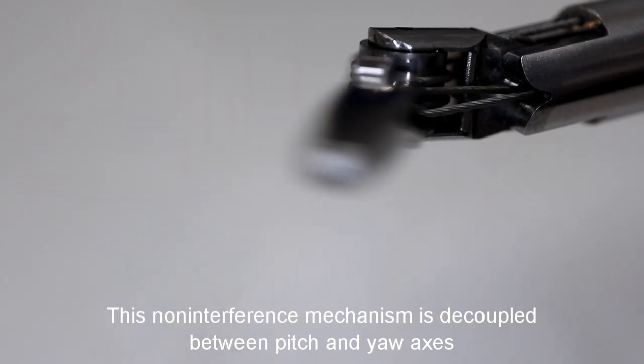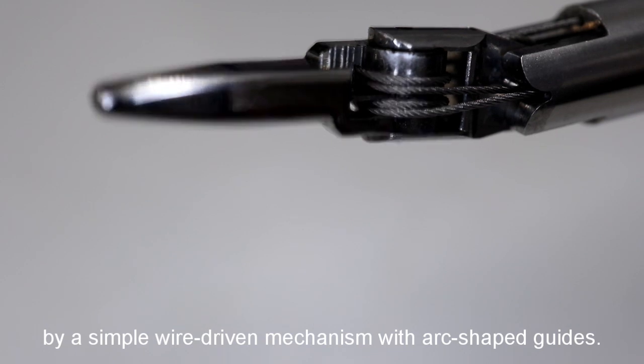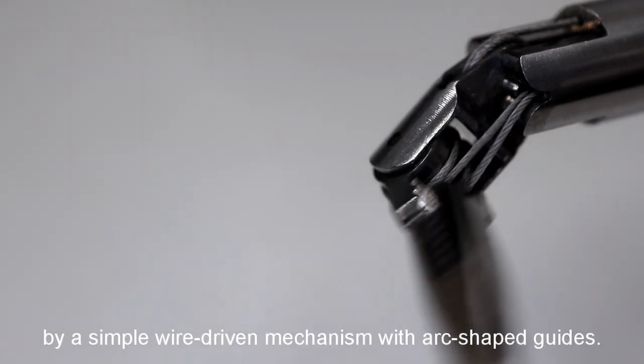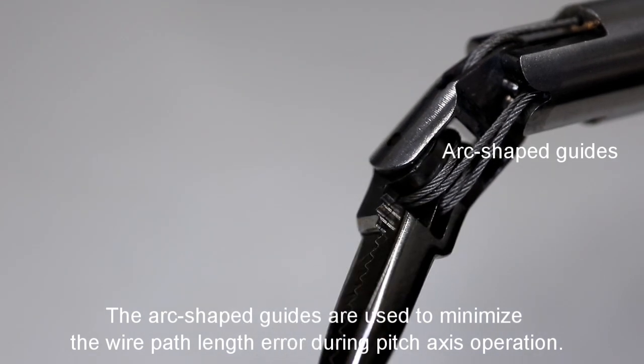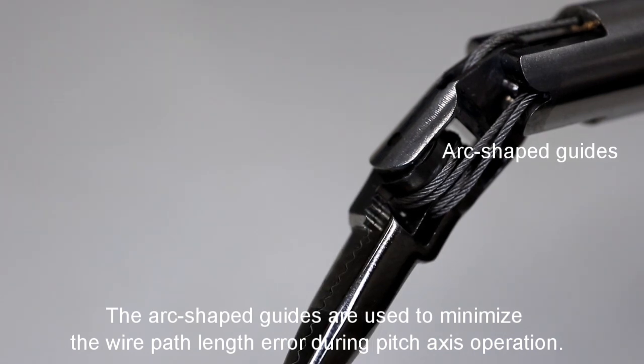This non-interference mechanism is decoupled between pitch and yaw axis by a simple wire-driven mechanism with arc-shaped guides. The arc-shaped guides are used to minimize the wire path length error during pitch axis operation.